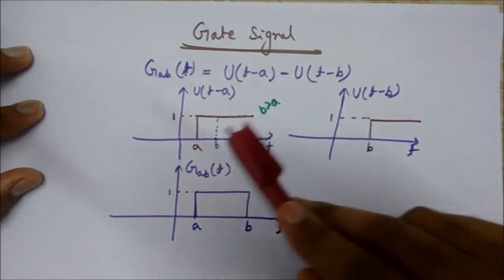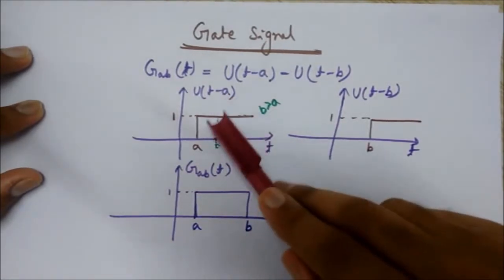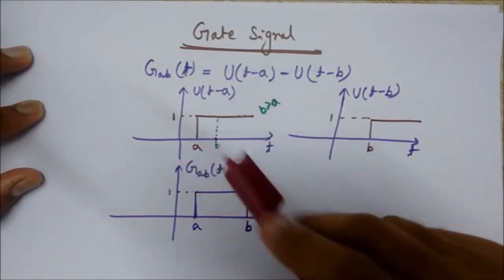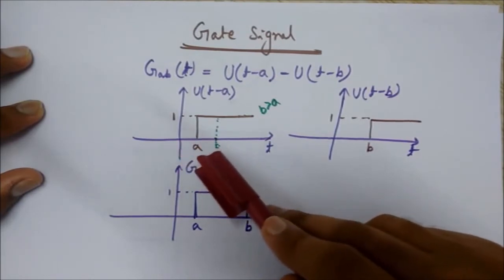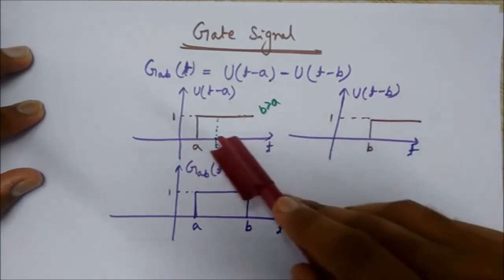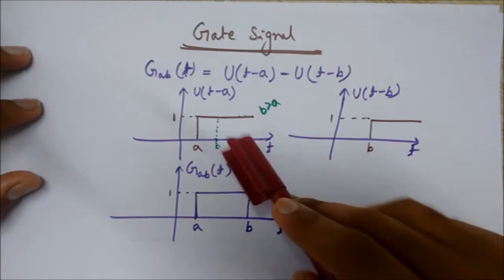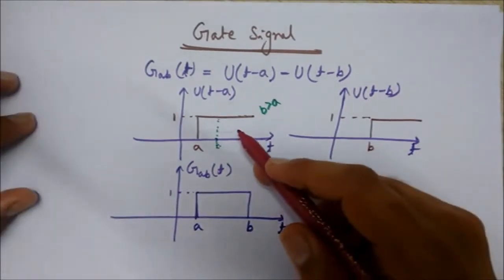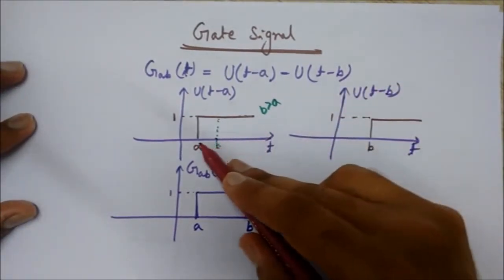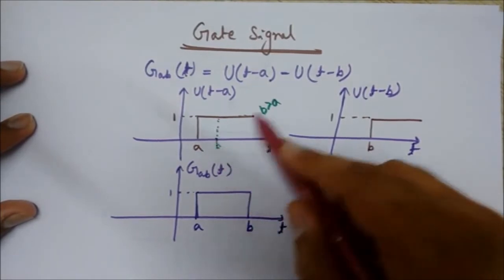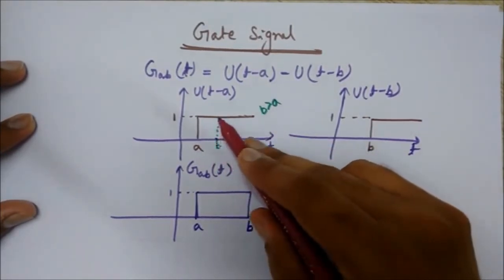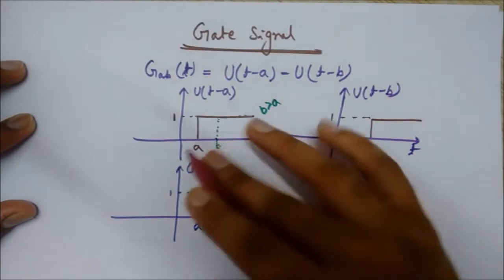Here you can see this dotted part. If I subtract U(t-b), let's draw this U(t-b) on the same graph. So b will come somewhere here if it is greater than a, then it would be something like this.